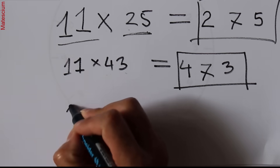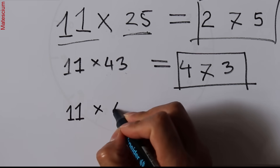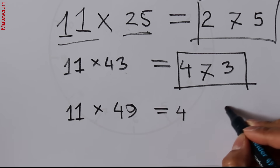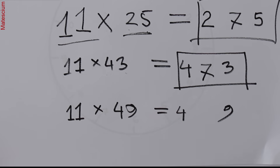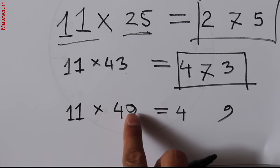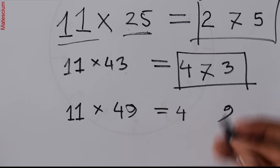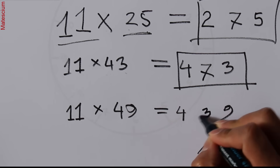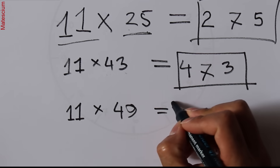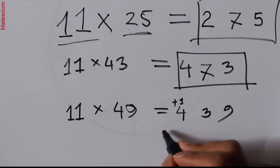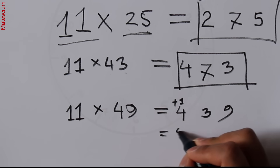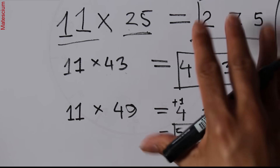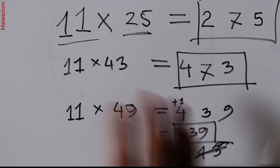There is one exception. For example, 11 multiplied by 49. The same rule applies: place 4 on one side and 9 on the other with a gap. Add them: 4 plus 9 is 13. Write the 3 exactly in the middle, and carry the 1 over to the left digit: 4 plus 1 is 5. So the answer is 539. Within 5 seconds you can multiply anything by 11 — it's pretty simple!